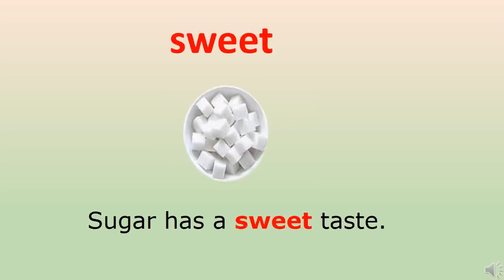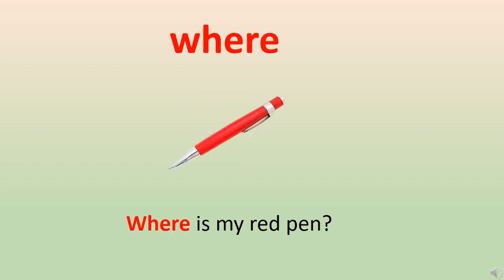The next word is 'sweet.' Children, you all know we taste with our tongue. You must know the taste of sugar and honey, and whatever nice sweet dishes mama makes has a sweet taste. Let's use sweet in a sentence: 'Sugar has a sweet taste.'